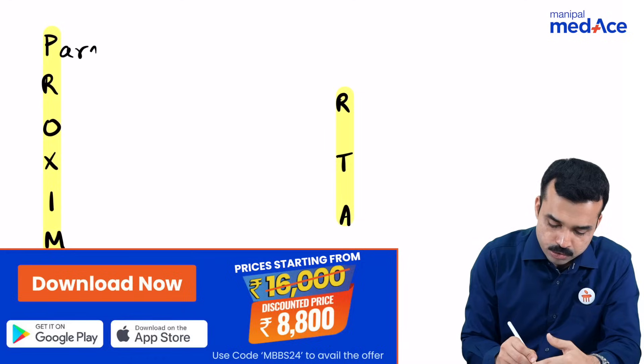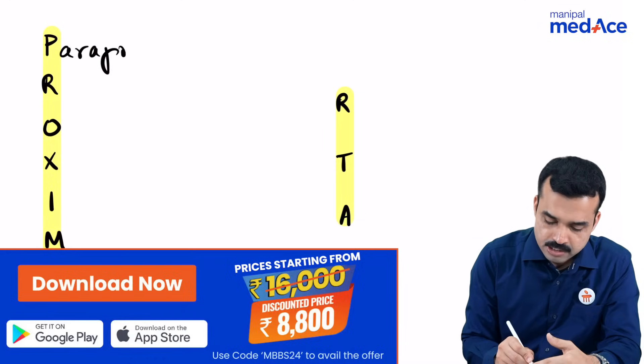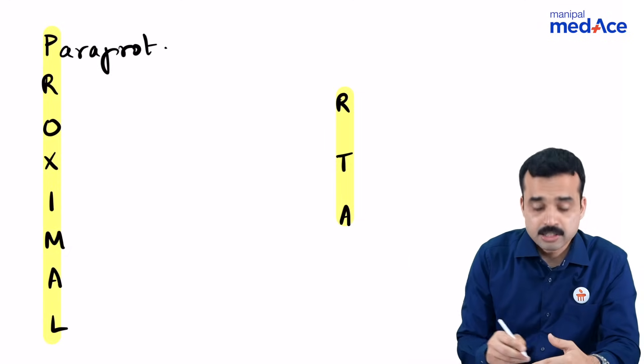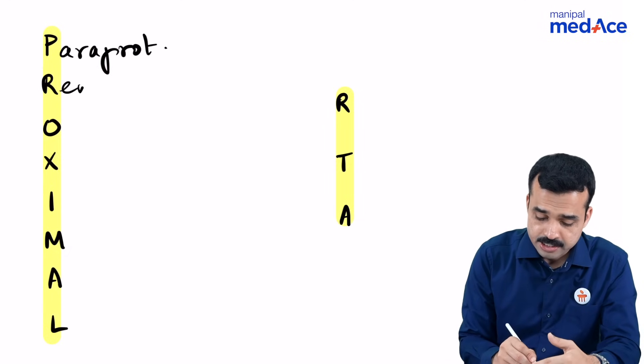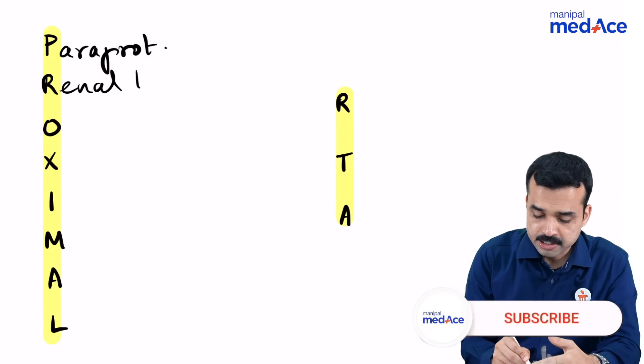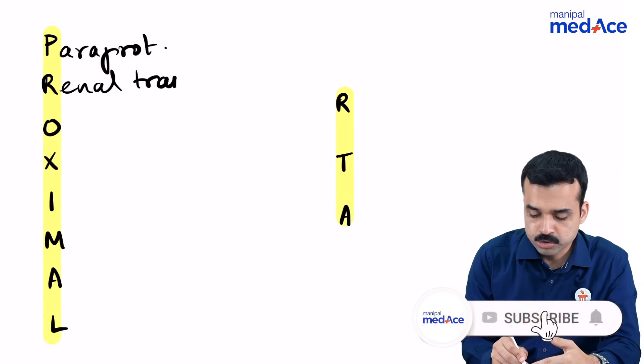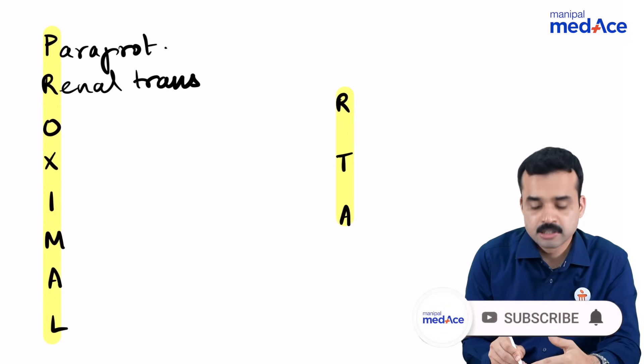P would stand for paraproteinemias like multiple myeloma. R stands for renal transplantation, that is post-transplant.